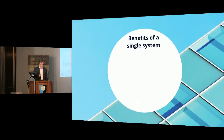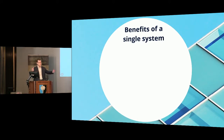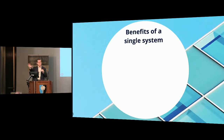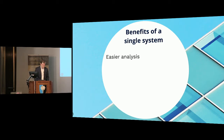What if you could have one system that does all of that? A system that manages your members and manages what they purchase — their subscriptions, online content subscriptions, downloads, pay-per-views, consortia deals — all in one system. Most people in this room have at least two systems: one to manage content subscription stuff and another to manage the membership. So let's talk about the benefits of having a single system that does both.